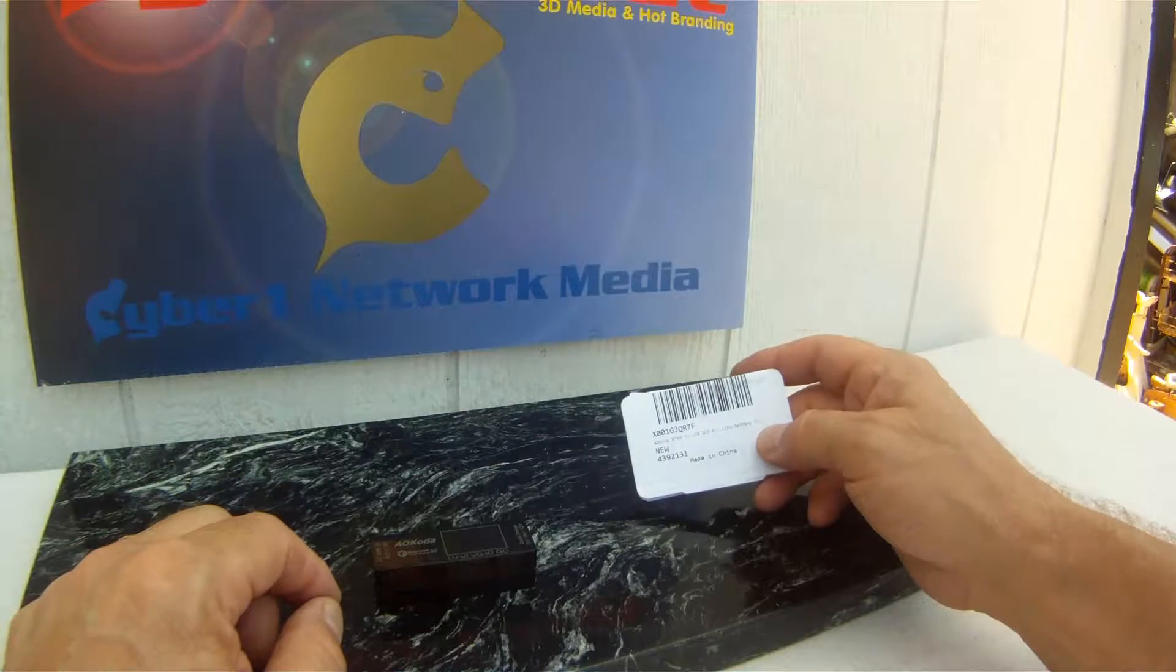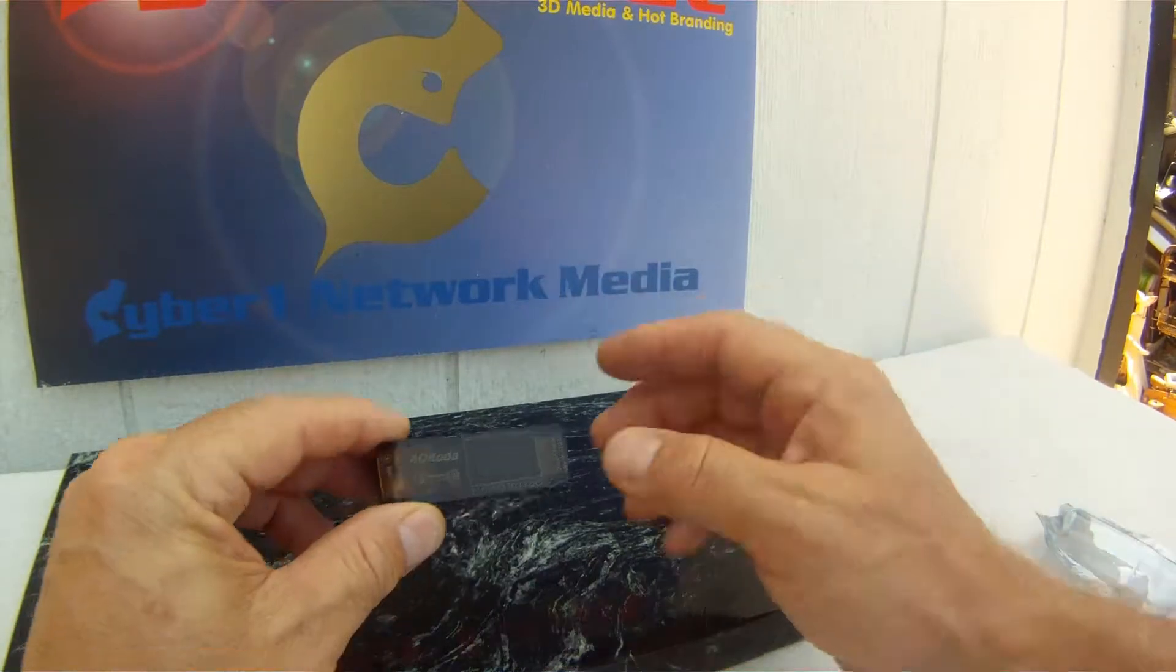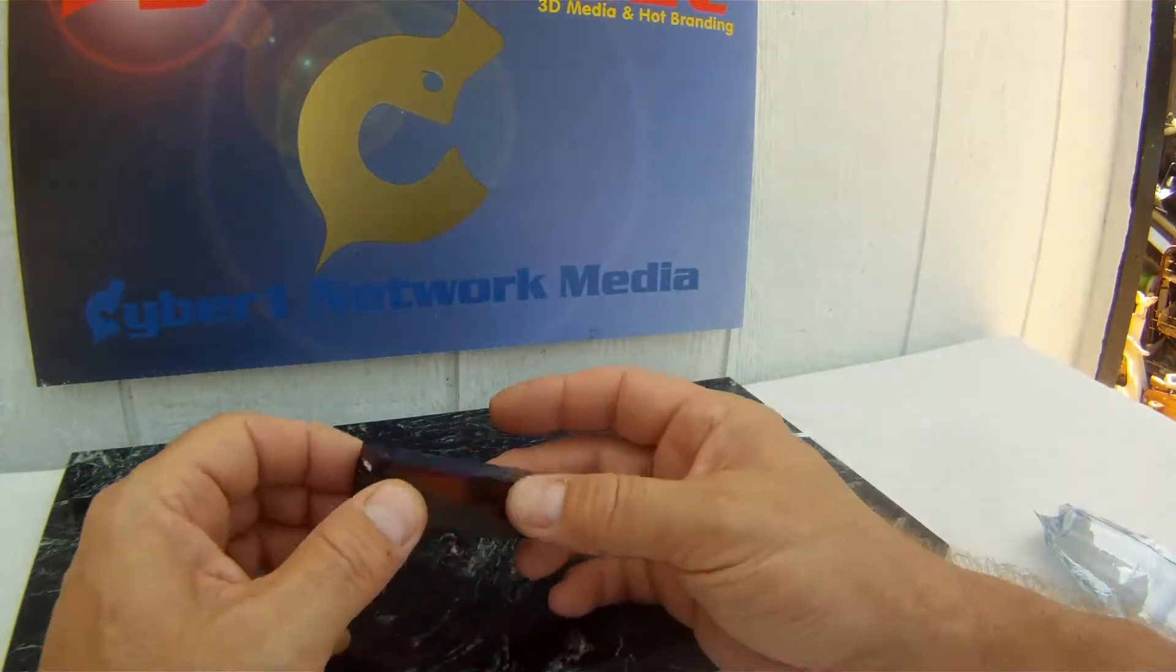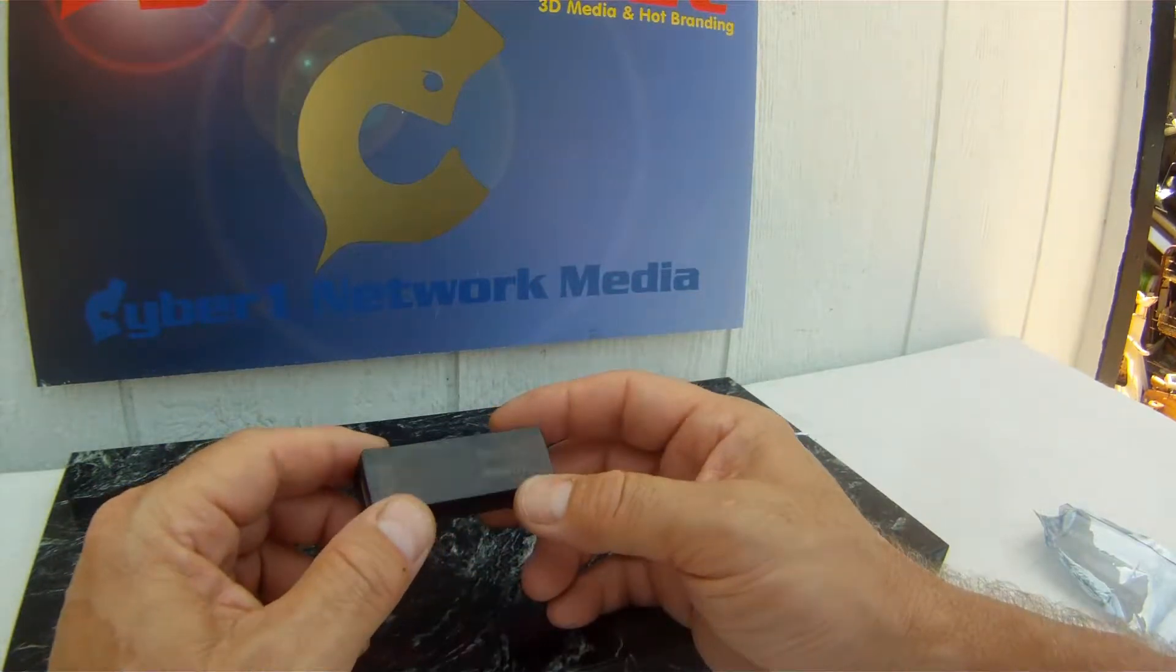This is an ACOTA XT60 to USB 3.0 LiPo battery discharger with that voltmeter in it. And what it'll allow you to do is basically create a power bank or a field discharge unit for your LiPo batteries.